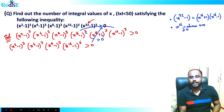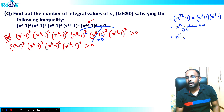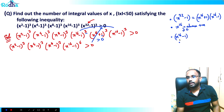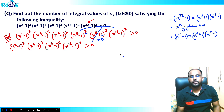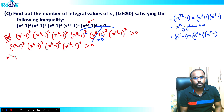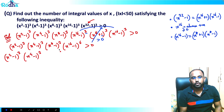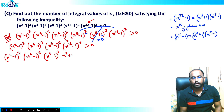Similarly, x¹⁶ - 1 can be written as (x⁸ + 1)(x⁸ - 1). So let's solve this again. I'll write: (x² - 1)³ · (x⁴ - 1)³ · (x⁸ - 1)³. And now x¹⁶ - 1 breaks into (x⁸ + 1) and (x⁸ - 1) raised to power 6.